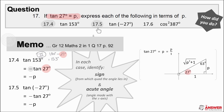For 17.5, we must express tan of negative 27 degrees in terms of p. Again we find the quadrant the angle lies in, and the acute angle formed with the x-axis. Negative 27 degrees lies in the fourth quadrant, and so tan is negative here, and so the answer is negative p.